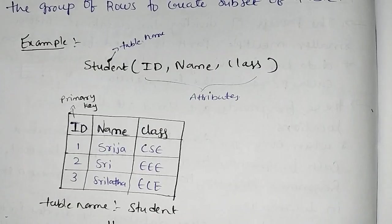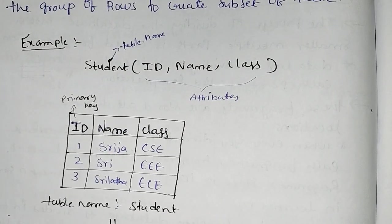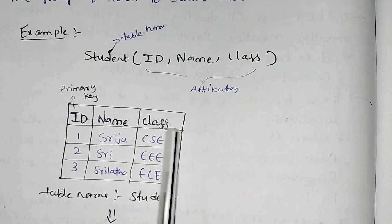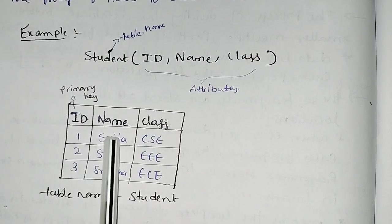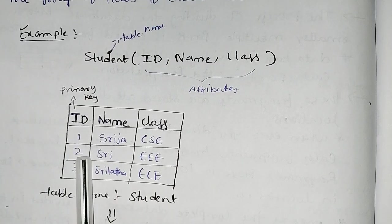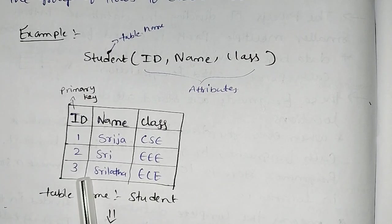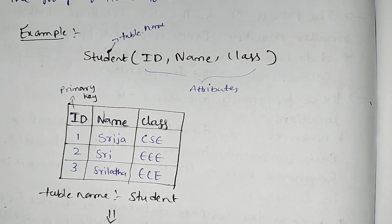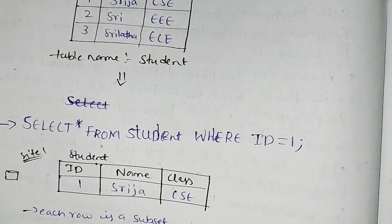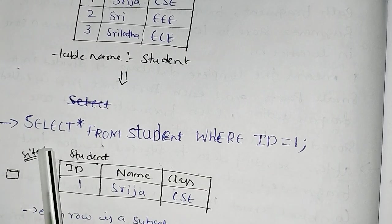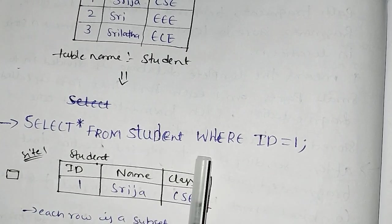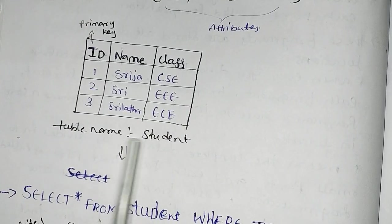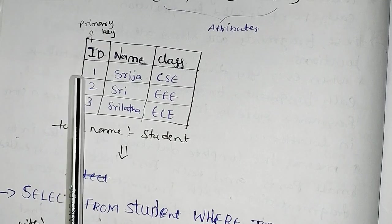The table name is student. The attributes are: ID (primary key), name, and class. So we have ID number 1 — name: Srija, class: CSE. ID number 2 — name: Sri, class: EEE. ID number 3 — name: Srilata, class: EC. Now I have a query: SELECT * FROM student WHERE id = 1. So we have student details in the table and we select that row — student ID 1 is selected.